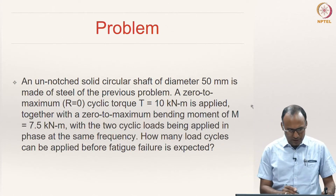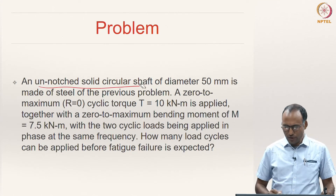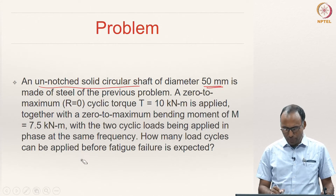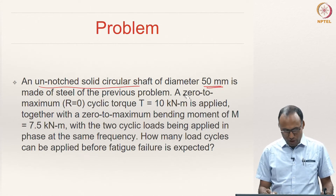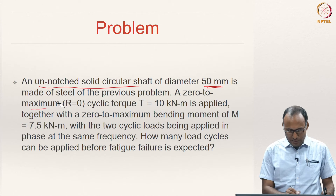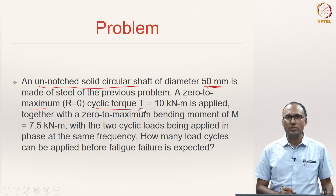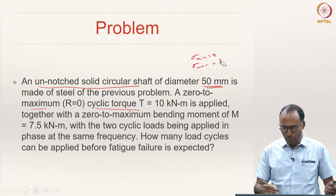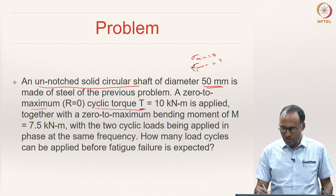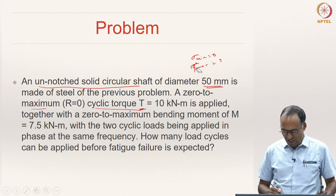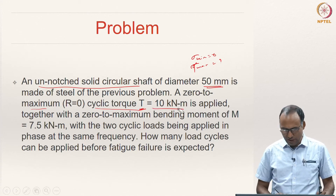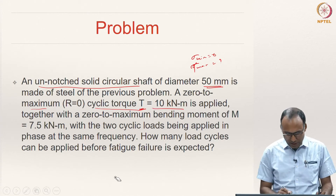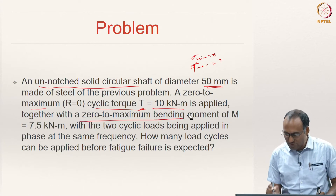Here we have a problem: an unnotched solid circular shaft of diameter 50 mm is made of steel. A 0-to-maximum cyclic torque — meaning sigma min equals 0 and tau max is some value — so you are cycling shear stresses. A torque of 10 kilo Newton meter is applied together with a 0-to-maximum bending moment.